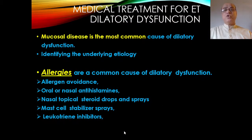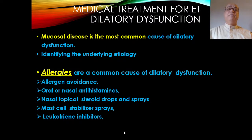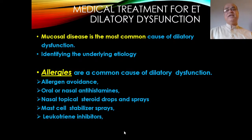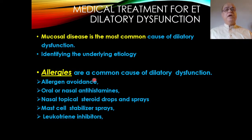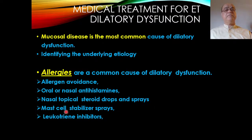Mucosal disease is the most common cause of dilatory dysfunction. Medical treatment for Eustachian tube dilatory dysfunction begins with identifying the underlying etiology. If allergy is the cause, treatment includes avoidance of the allergen, oral or nasal antihistamines, nasal topical steroid drops and sprays, mast cell stabilizer sprays, and leukotriene inhibitors. Allergy should be dealt with on its own merit.